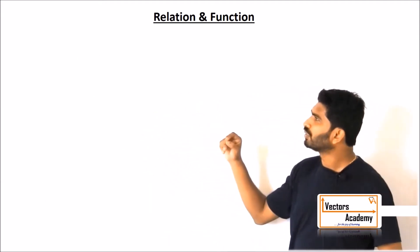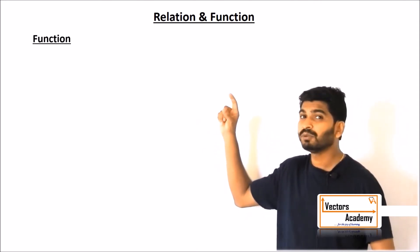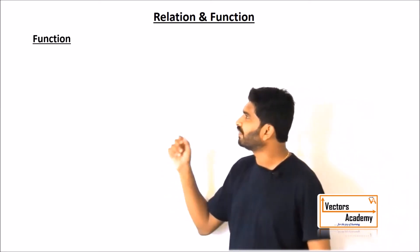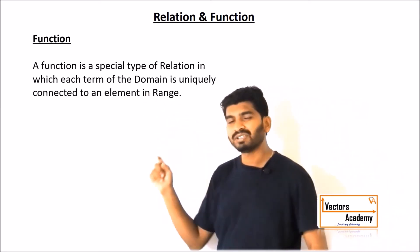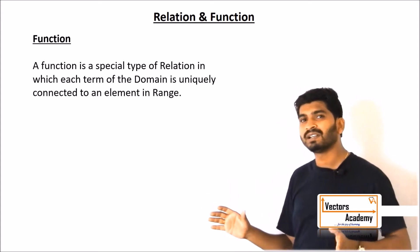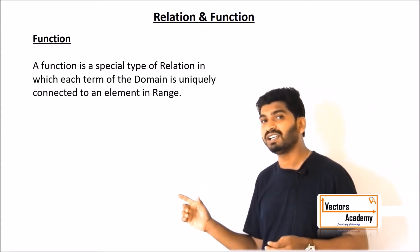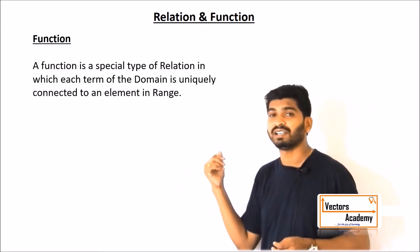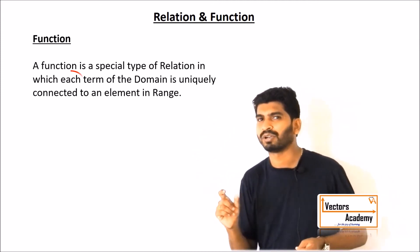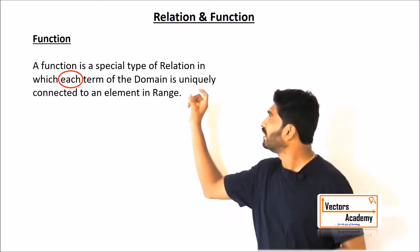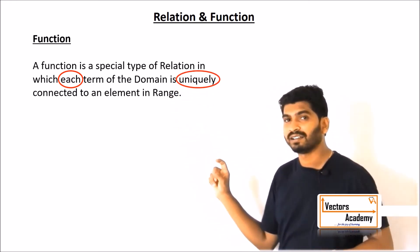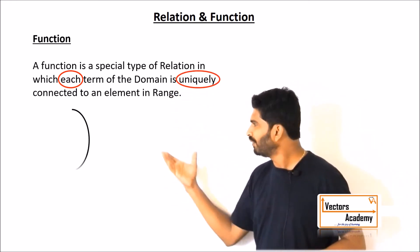Moving on to the most important concept in this chapter — a function. A function is a special type of relation in which each element in the domain is uniquely connected to an element in the range. In this definition, there are two very important phrases: 'each element' and 'uniquely connected.'